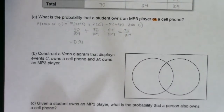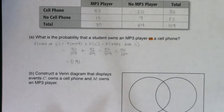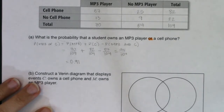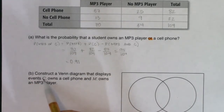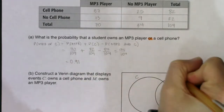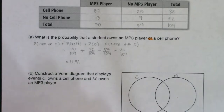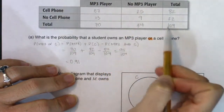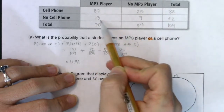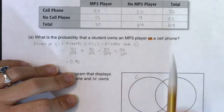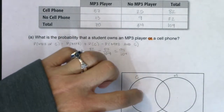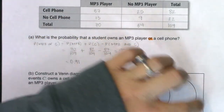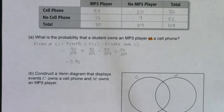Now let's take this table and map it onto a Venn diagram. You can almost see the Venn diagram inside the table. The problem says: construct a Venn diagram displaying event C (owns a cell phone) and event M (owns an MP3 player). When transferring data from the table to the Venn diagram, focus on the four main numbers — ignore the totals. Those four numbers are 57, 25, 13, and 9, and there are four areas in any Venn diagram: the left moon, the football, the right moon, and the outside universe.